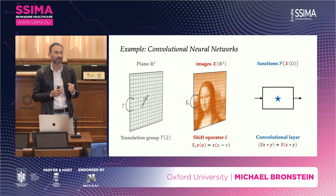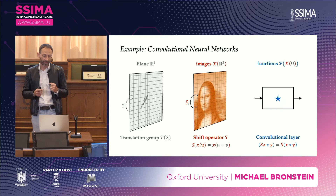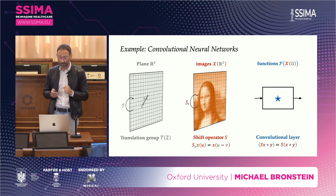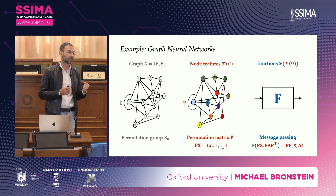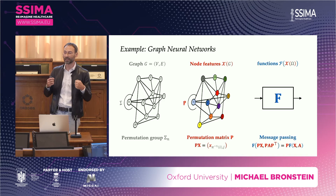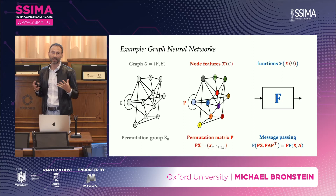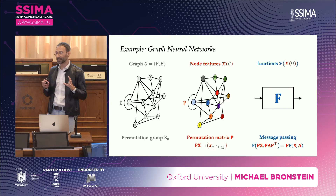One classical example is convolutional neural networks: the domain is a plane, the symmetry group is translations, the data are images living on planes or grids, and the equivariant functions are convolutions — we can actually derive convolution from this first principle. Another example we'll discuss are graph neural networks: the domain is a graph, the underlying group is the group of permutations reflecting the fact that there is no canonical ordering of nodes, and message passing is a mechanism equivariant with respect to permutations.